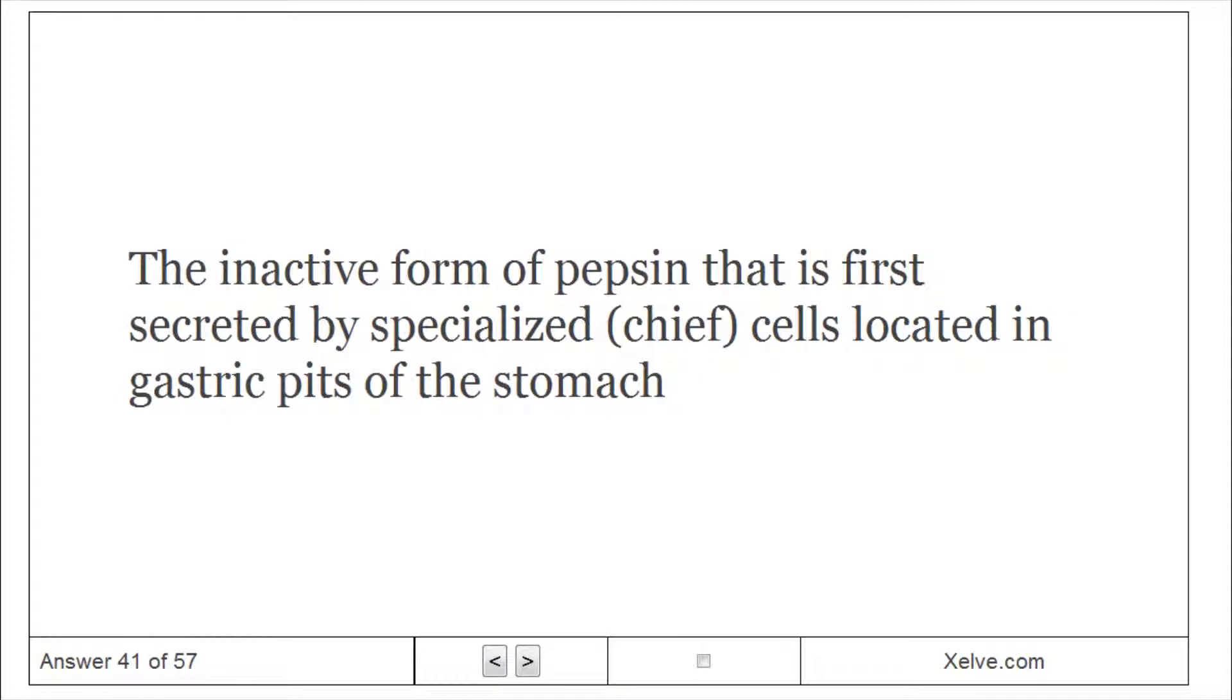Pepsinogen – the inactive form of pepsin that is first secreted by specialized chief cells located in gastric pits of the stomach.